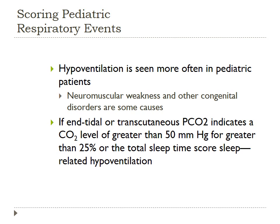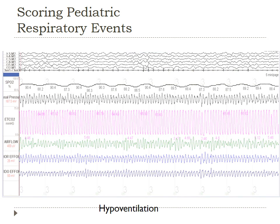Hypoventilation is seen more often in pediatric patients, especially those with neuromuscular weaknesses and other congenital disorders. If end-tidal or transcutaneous PCO2 indicates a CO2 level of greater than 50 for more than 25% of the total sleep time, score it as sleep-related hypoventilation. An example shows end-tidal CO2 readings consistently at 64 to 65 — above 50 — and if that persists for 25% or more of the study, it would be scored as sleep-related hypoventilation in the pediatric patient.